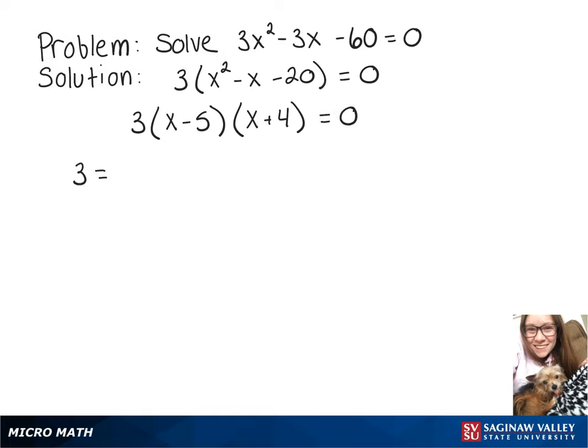Now we separate each of those parts, giving us either 3 = 0, or x - 5 = 0, or x + 4 = 0.